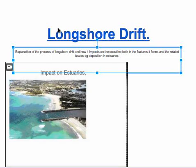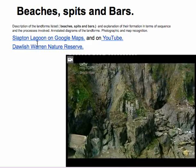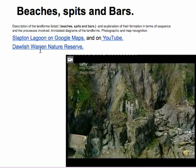Last lesson we had a look at longshore drift. We're going to look at something related to longshore drift: beaches, spits, and bars. Have a watch of the video — it's really good. It shows you an example of a very famous bar. Also have a look at the example of the Dawlish Warren nature reserve. Later on we'll be asking you to look at your own examples of spits and bars around the UK using Google Earth.